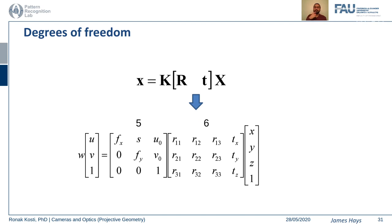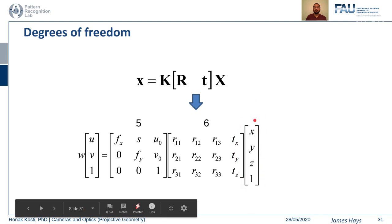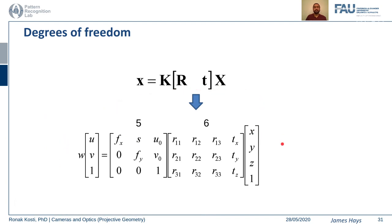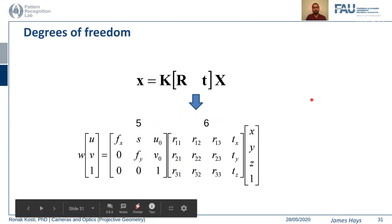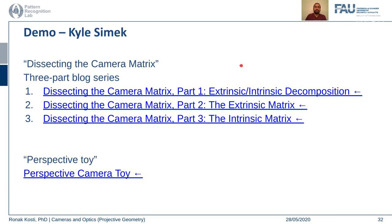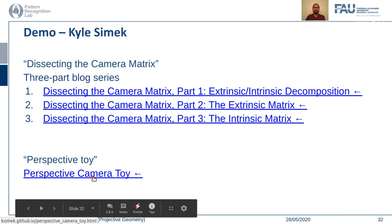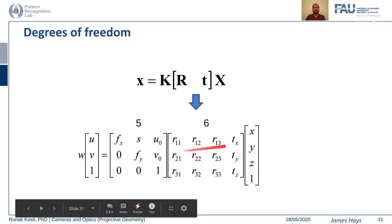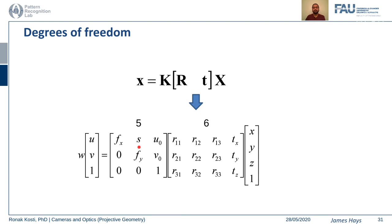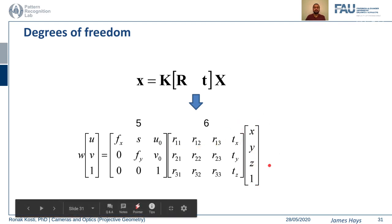The question becomes: to convert a real world point to an image plane point with 11 degrees of freedom, how many (image plane, real world) point correspondences do you need to recover the camera matrix? I recommend going through the three blog posts — each takes about 10–15 minutes — and definitely playing with the camera toy demo where you can introduce different rotations, translations, and intrinsic camera parameters to see how they affect the projection of a real world object onto the image plane.